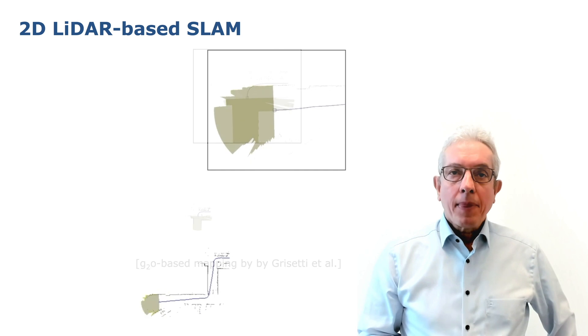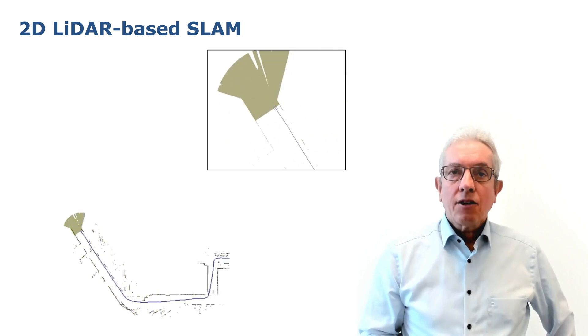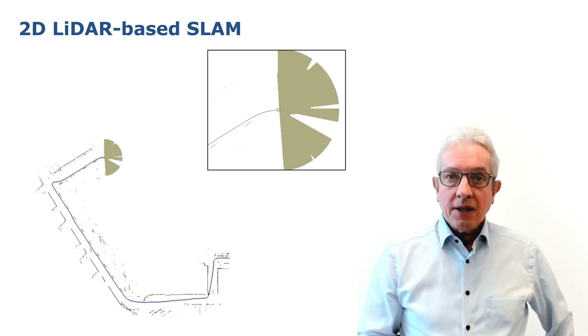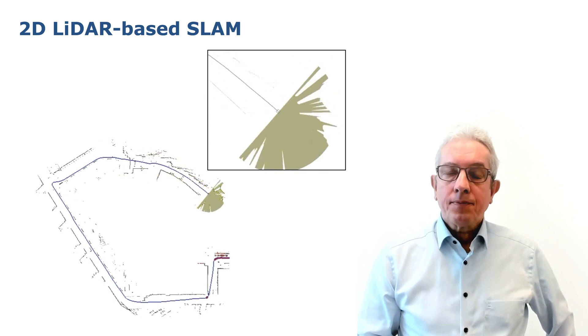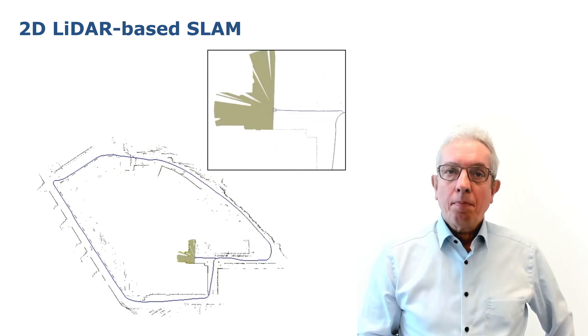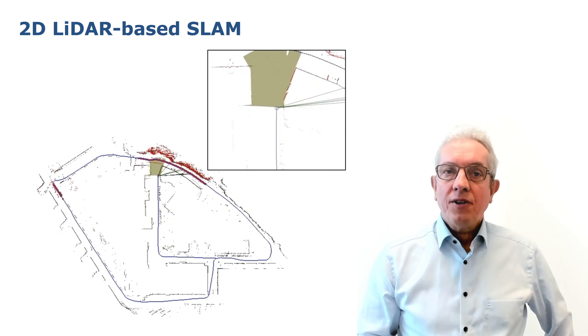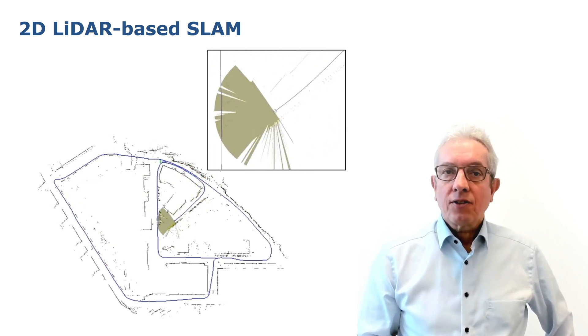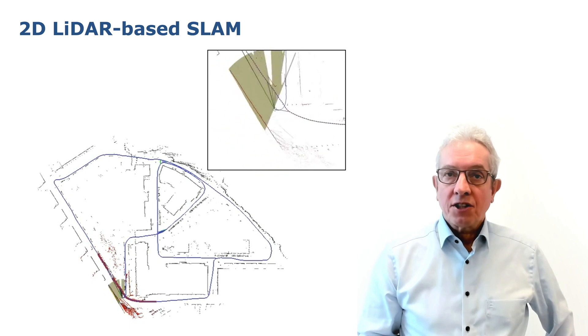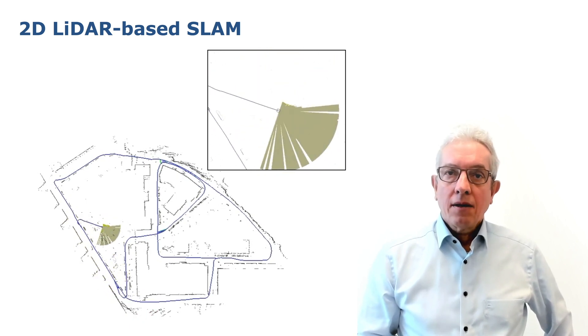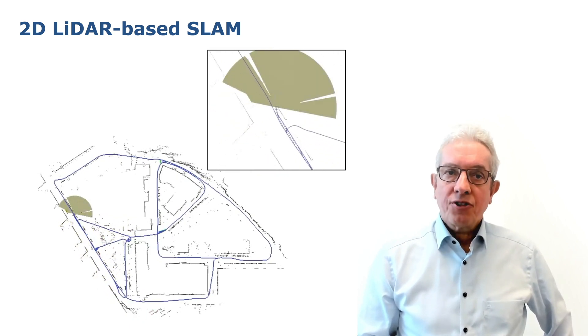Here you see an example of a robot navigating through its environment and building a map of the environment. Whenever the robot comes back to a place it has been to before, we see that there are corrections made to its trajectory and the map. This is basically what a SLAM process does.